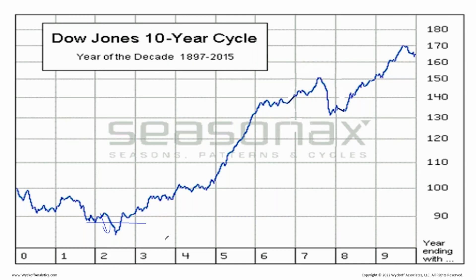I was thinking about the second year of a Democratic presidency, which usually has a low somewhere in June or July. It would be so appropriate to shake everything out then. You have two things at work: a midterm election year and the decennial pattern — both showing mid-year lows.